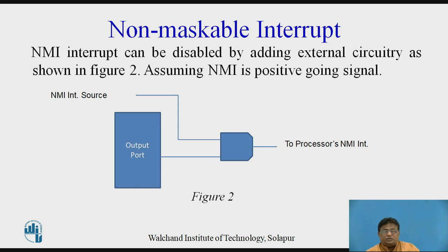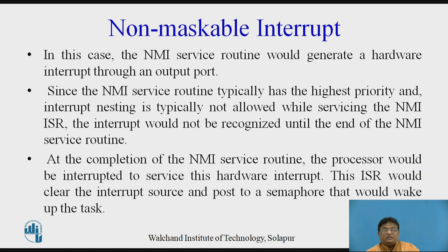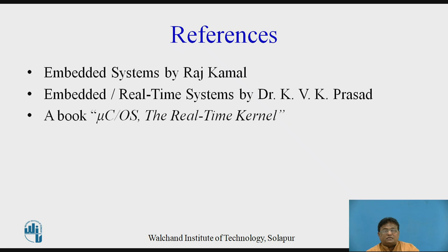By writing a 0 to the respective output port pin, the non-maskable interrupt can be disabled. From a non-maskable interrupt ISR the kernel cannot be used to signal the task, but the same scheme shown in figure 3 could be used. In this scheme the NMI service routine would generate a hardware interrupt through an output port. Since the NMI service routine typically has the highest priority and interrupt nesting is not allowed while servicing the NMI, the interrupt would not be recognized until the end of the service routine. At the completion of the NMI service routine, the processor would be interrupted to service the hardware interrupt, and this ISR would clear the interrupt source and post to a semaphore to wake up the task.